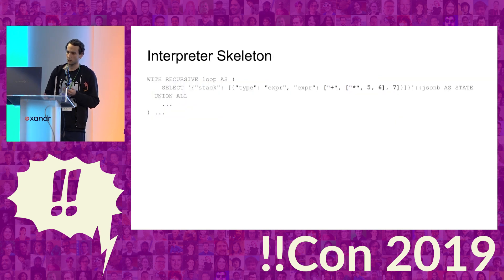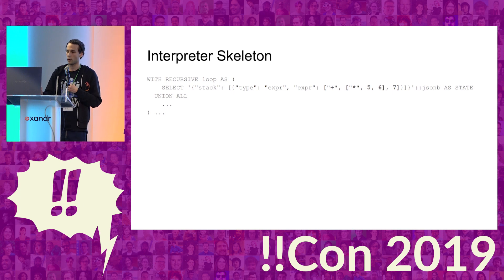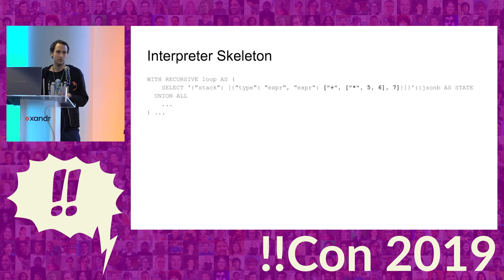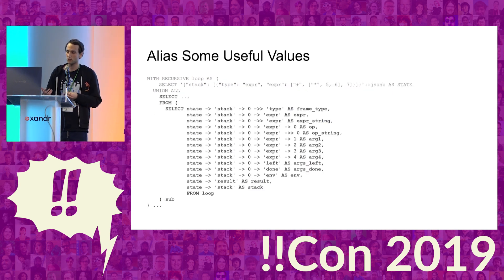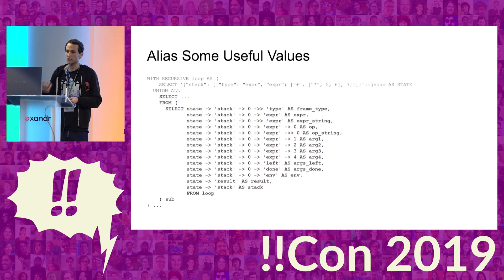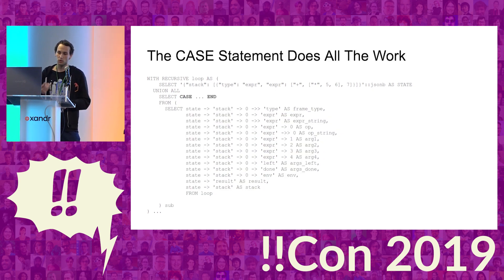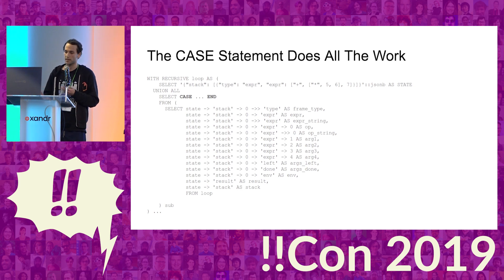Here's a skeleton of what our interpreter will look like. It's a recursive CTE, and for our initial query we have an initial state that's a single expression stack frame with the program we want to run — in this case, multiply five by six and then add seven, so the answer is 37. For our recursive query, we alias a bunch of values like the type of the first stack frame, and all the actual logic is done in a CASE statement that branches against the current state and returns a new resulting state.